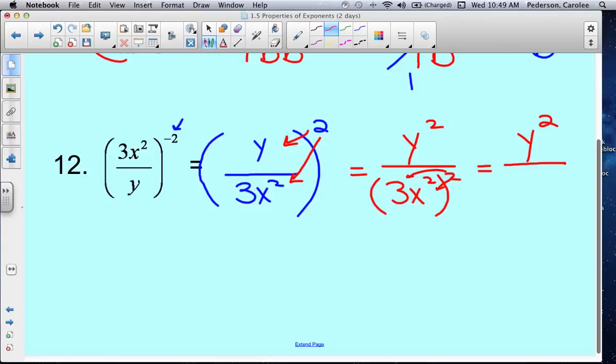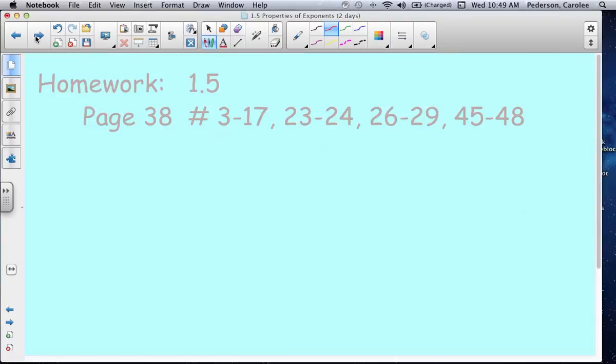3 times 3 is 9. x squared times x squared is x to the 4th. We've now completed our lesson for lesson 1.5 on exponents.